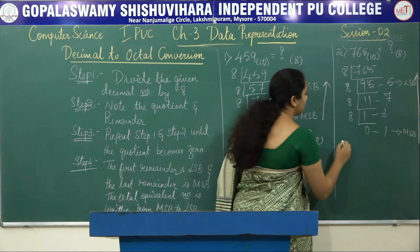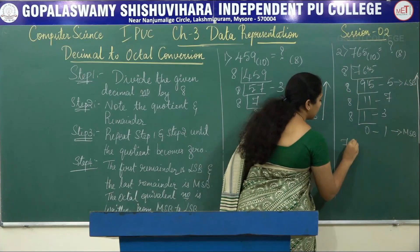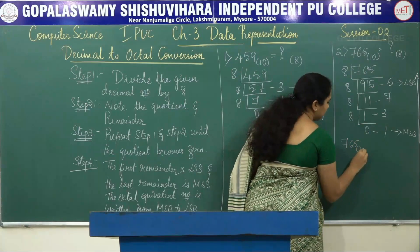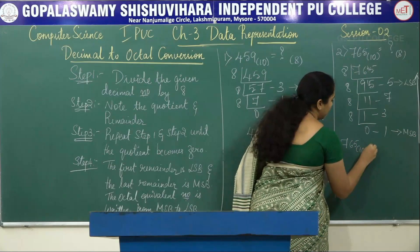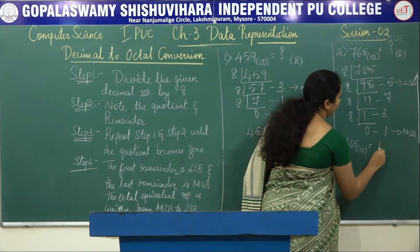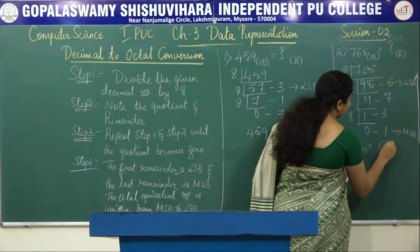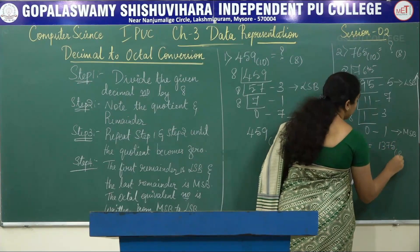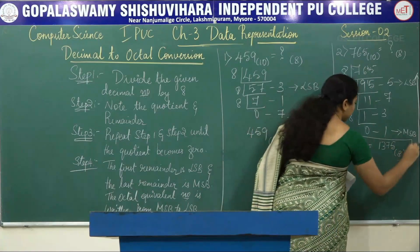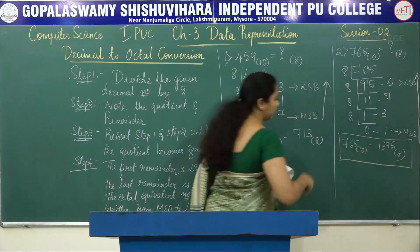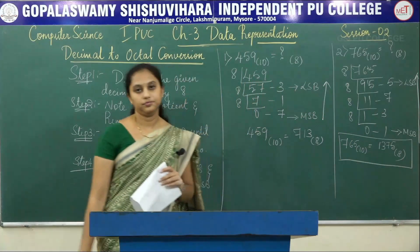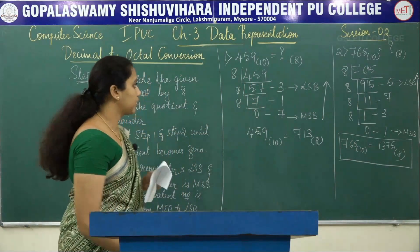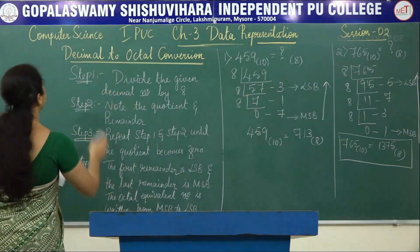So the value of 765 base 10 is 1375 base 8.